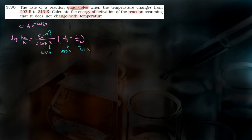अब बचा k2 and k1 — इसकी value तो इन्होंने नहीं दी, लेकिन rate of reaction दिया हुआ है। Rate of reaction 4 times हो जाता है। अगर rate of reaction की बात करूँ, तो r2 by r1 = 4। और क्योंकि concentration change नहीं हो रही, सिर्फ temperature change होगा, तो rate constant का ratio भी वही होगा। तो k2 by k1 की जगह हम 4 लिख लेंगे।